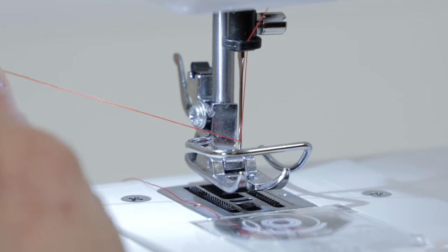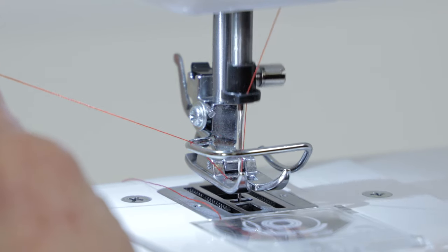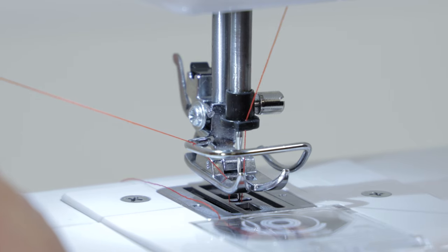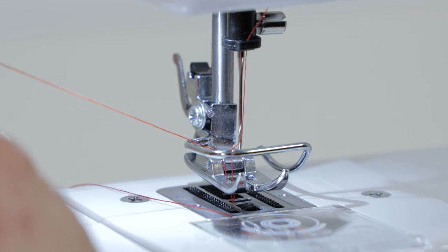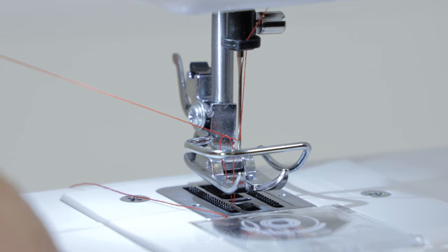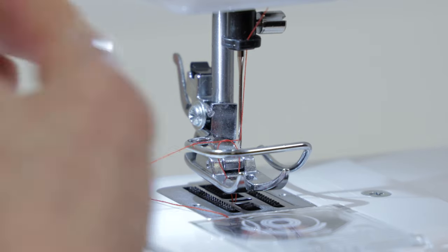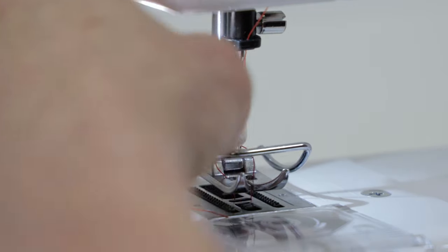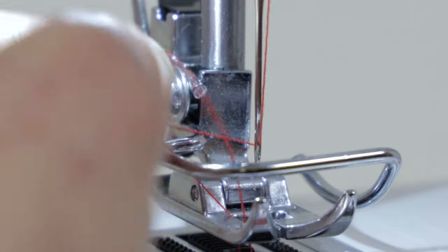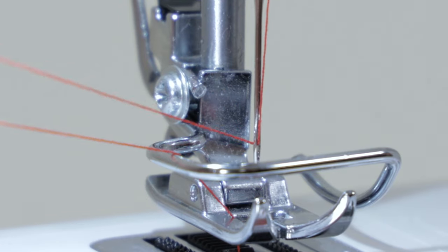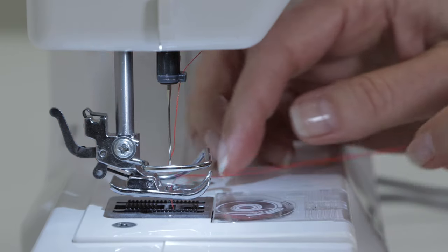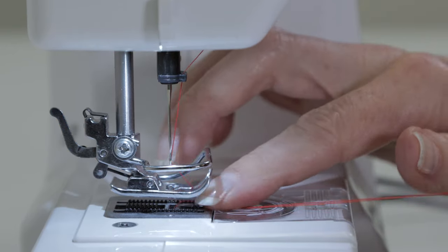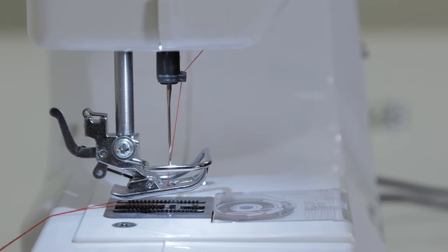Lightly hold your thread with your left hand as you turn the hand wheel toward you to lower the needle down, and then continue pulling the thread until you see a loop come up through the hole of the presser foot. Pull the loop to bring the bobbin thread up through the hole of the needle plate, and then place both threads around the back of the finger guard and underneath the presser foot out to the back of the machine.